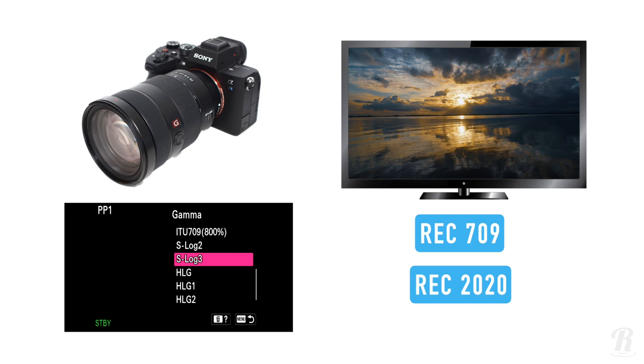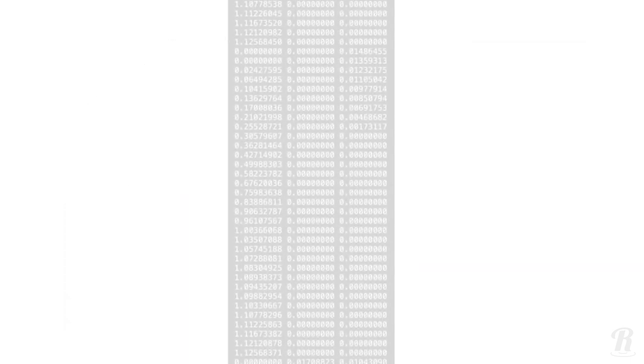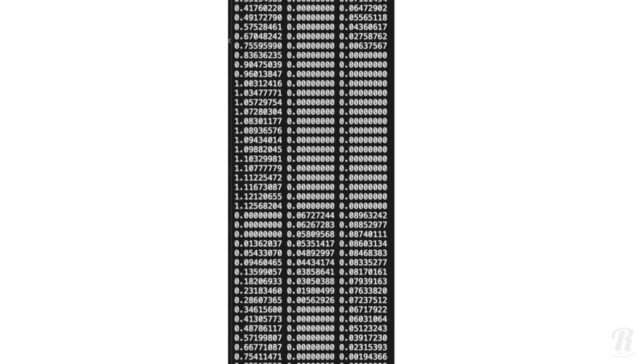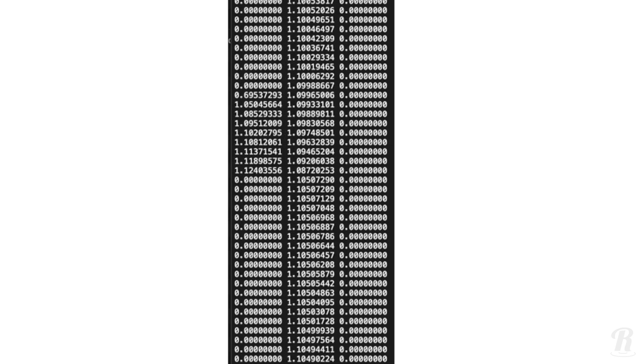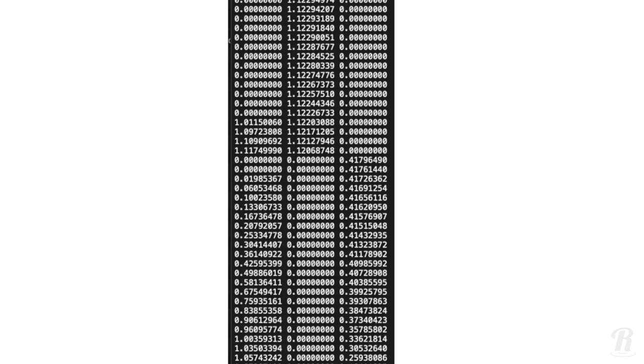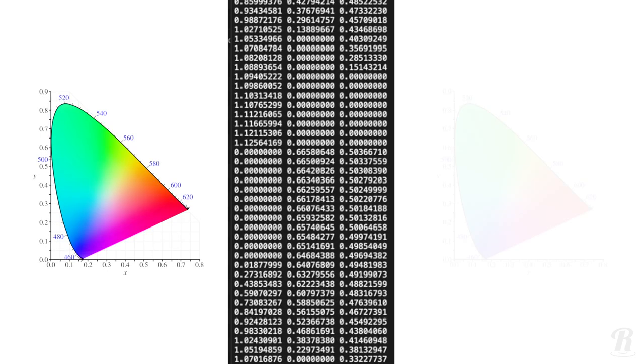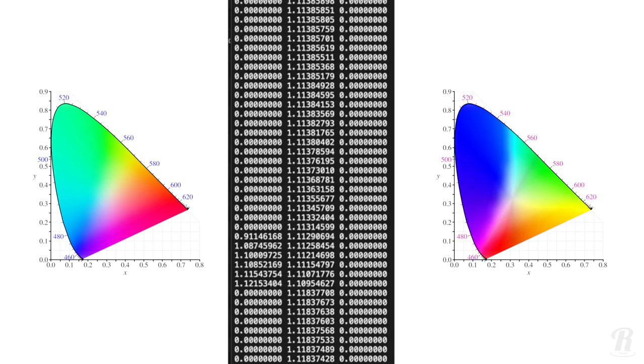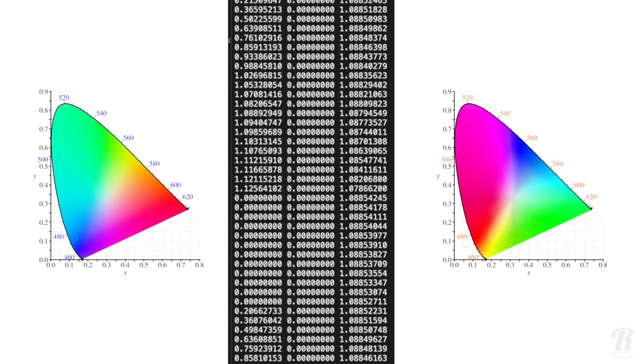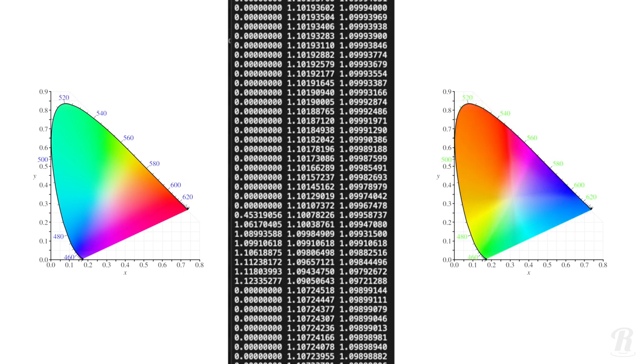So what do color spaces have to do with LUTs? Well, a LUT, or lookup table, is simply a big list of numbers that converts one set of colors into another set of colors. Often, but not always, you can use a LUT to convert from one color space to another.